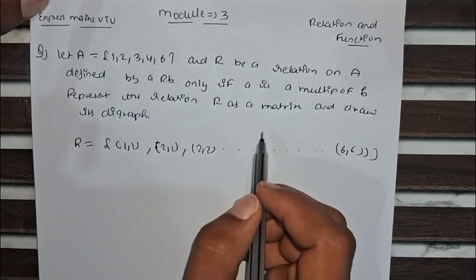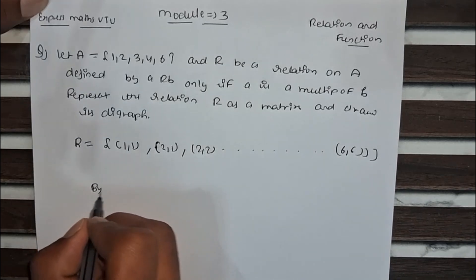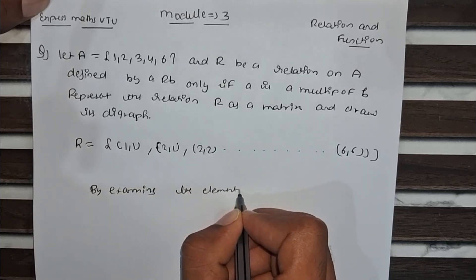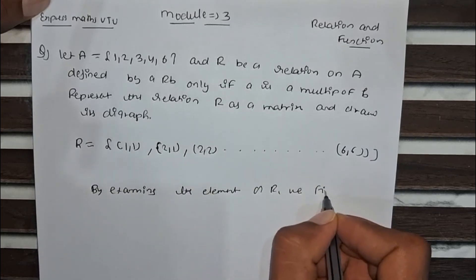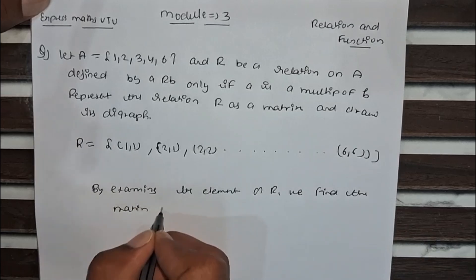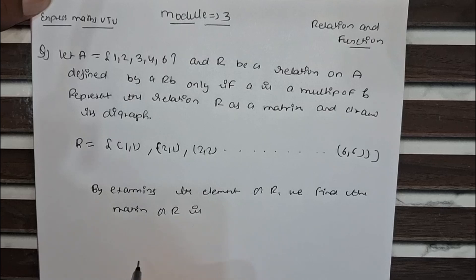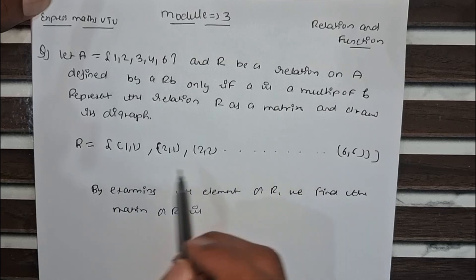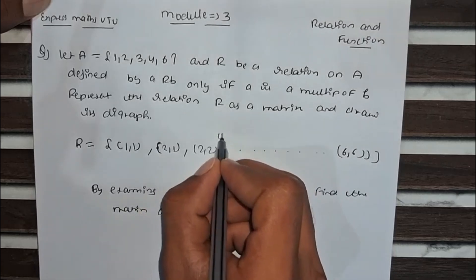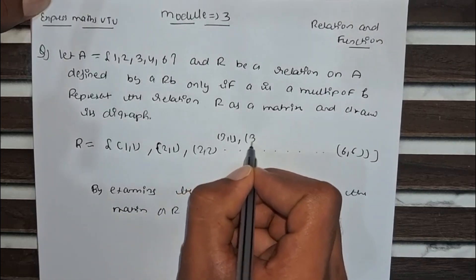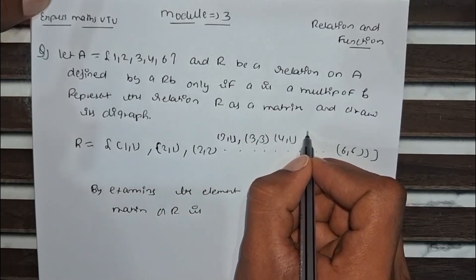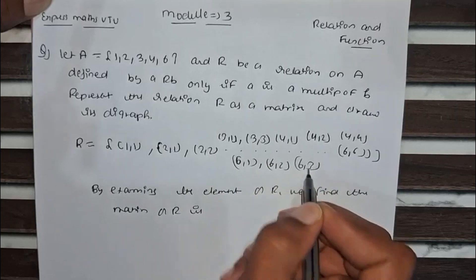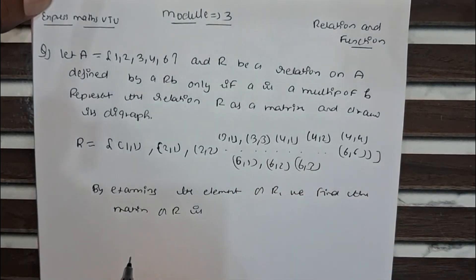Now let's go for the matrix, because in this question we have to find the matrix also. By examining the elements of R, we can list all the elements: (1,1), (2,1), (2,2), (3,1), (3,3), (4,1), (4,2), (4,4), (6,1), (6,2), (6,3), and (6,6). Now go for the matrix — M of R equals: